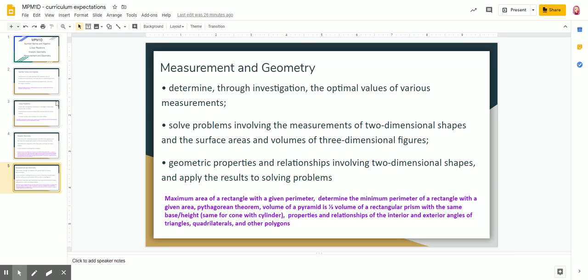The fourth topic is measurement geometry, and that's what we started the course off with. We looked at some optimization: what is the maximum area of a rectangle given the perimeter, or determine the minimum perimeter given an area. We looked at what the Pythagorean theorem was: a squared plus b squared equals c squared. It's used to find the length of one of the sides in a right-angled triangle.